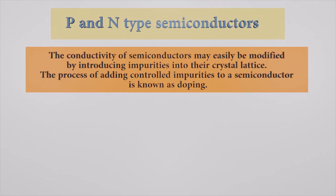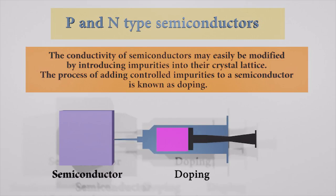Let's talk about P and N-type semiconductors. The conductivity of a semiconductor may easily be modified by introducing impurities into their crystal lattice. The process of adding controlled impurities to a semiconductor is known as doping.